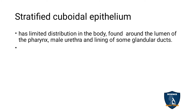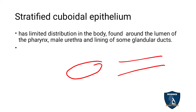Stratified cuboidal epithelium is seen in limited distribution in the body. It forms the lumen — the inner hollow space of a pipeline-like structure through which fluid can pass. This tissue is seen in the pharynx, male ureter, and the lining of some glandular ducts, where it acts as the lining layer.